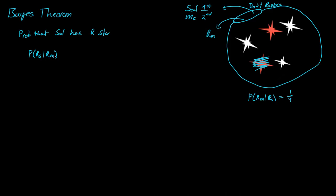So how do we solve this? Well, let's just write out the given function. We know that a given function is equal to the probability of Sal getting a red star and me getting a red star, all divided by the probability of me getting a red star. That's a basic given function. But usually when we have a given function, we're solving for this — but we don't know what this is, so we can't solve for it directly.